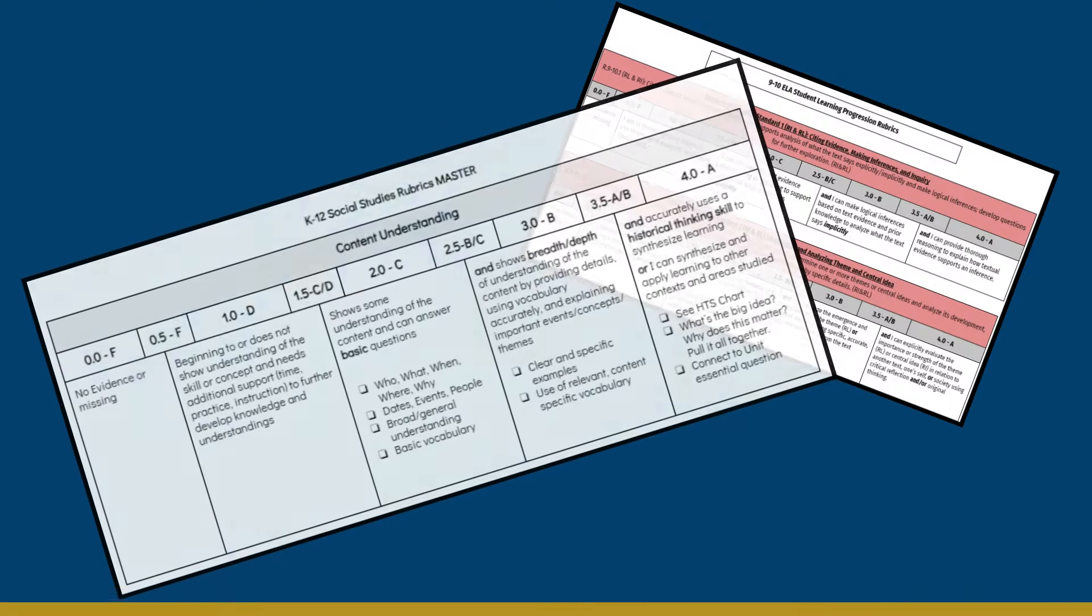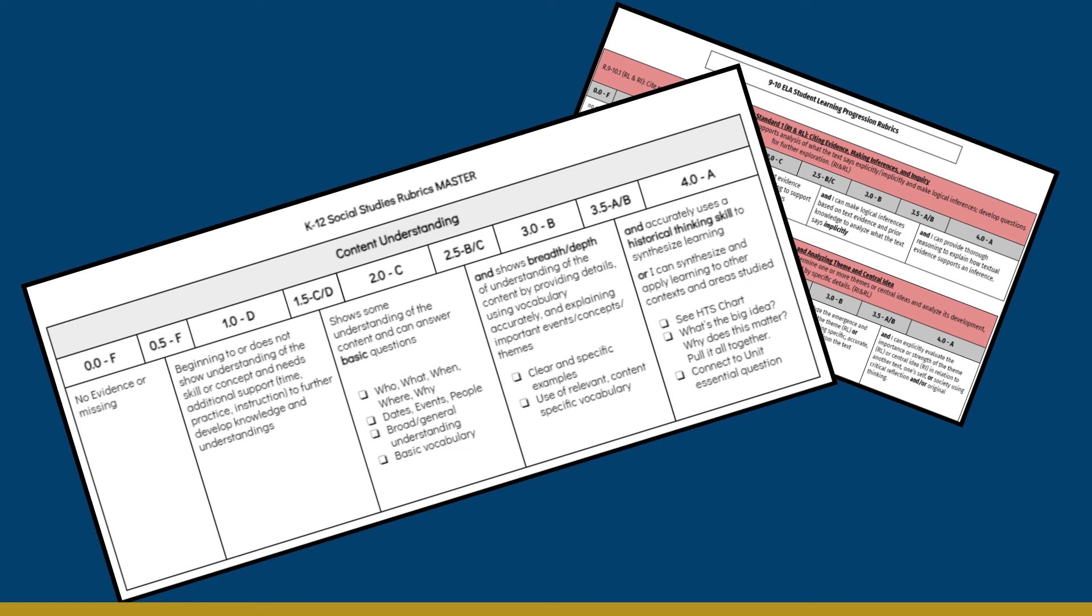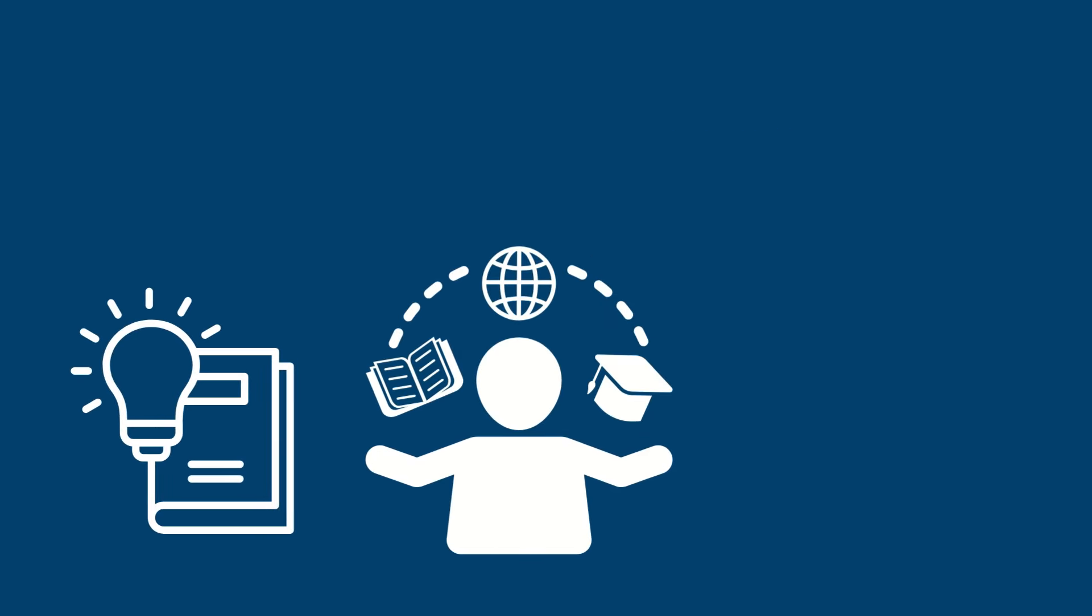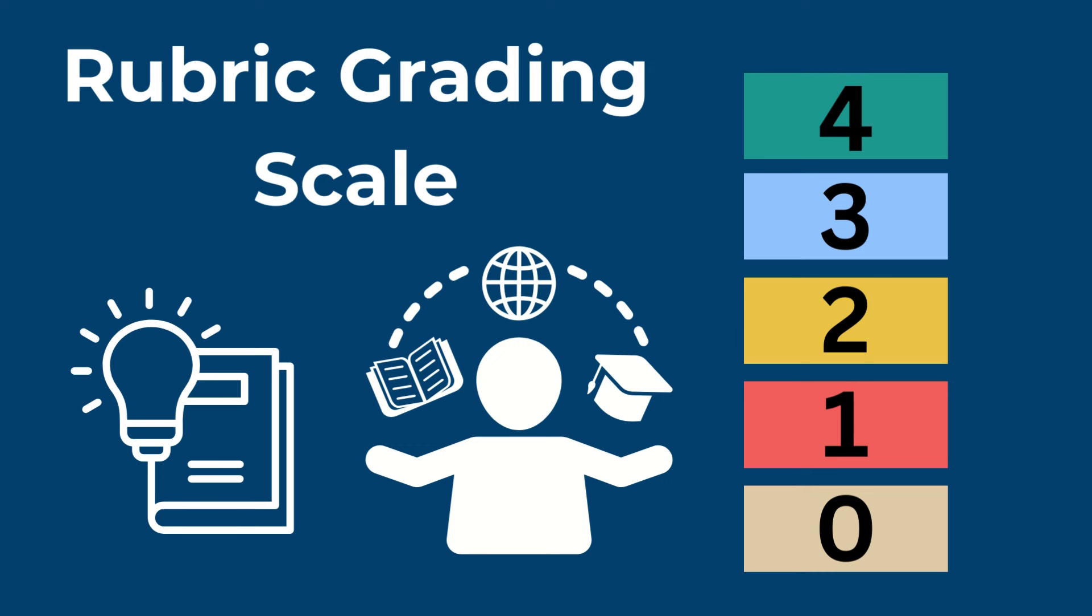The Hamilton School District uses proficiency scale rubrics from 4K all the way up through high school. Rubrics are tools for educators to provide feedback, giving detailed information about a student's depth of knowledge, all of it organized on a scale of 0 to 4.